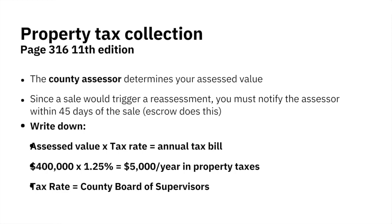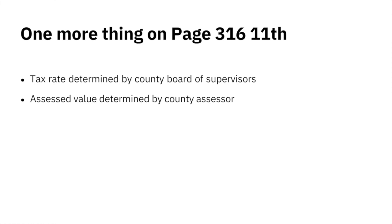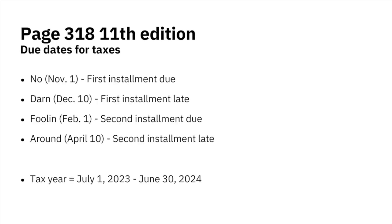On page 316: the tax rate is determined by the county board of supervisors; the assessed value is determined by the county assessor. Now, on page 318: how often do we pay property taxes in California? We pay property taxes twice a year. You can remember this by the acronym 'No Darn Foolin' Around.' The N and D refer to the first installment; the F and A refer to the second installment.